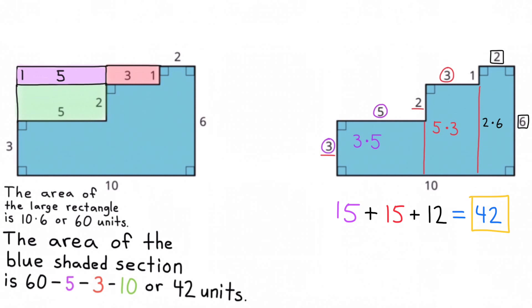The area of the quadrilateral on the left is 15. The area of the quadrilateral in the middle is also 15. And the area of the quadrilateral on the right is 12. 15 plus 15 plus 12 equals 42. Just like the shaded blue area in the shape on the left, the area of this shape is also 42.